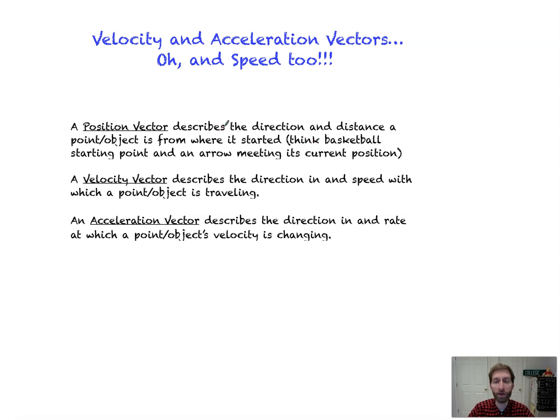Remember that a position vector describes the direction and the distance an object or point is from where we started. I stated this before, think like a basketball starting point where it's shot, and then all the way up to maybe a point in time where you're looking at it. So it's the direction and distance.